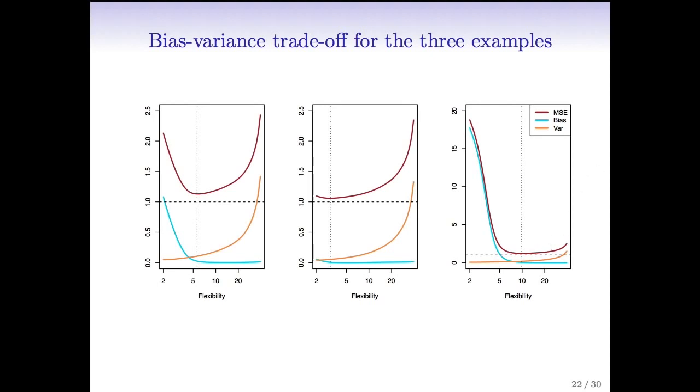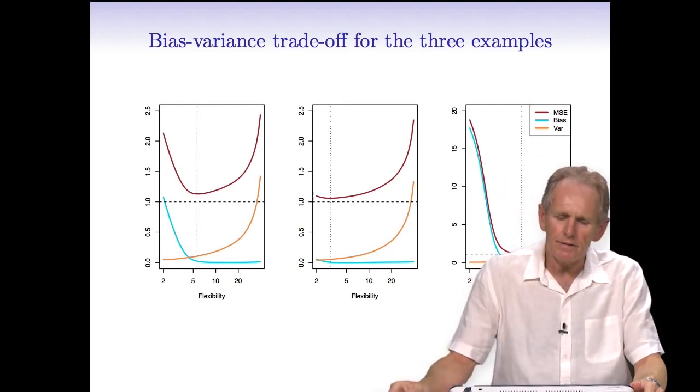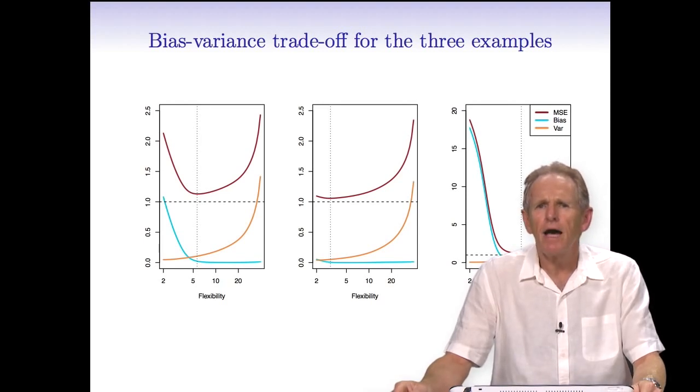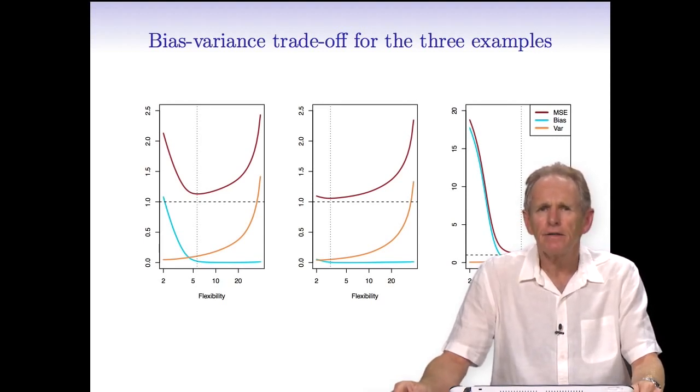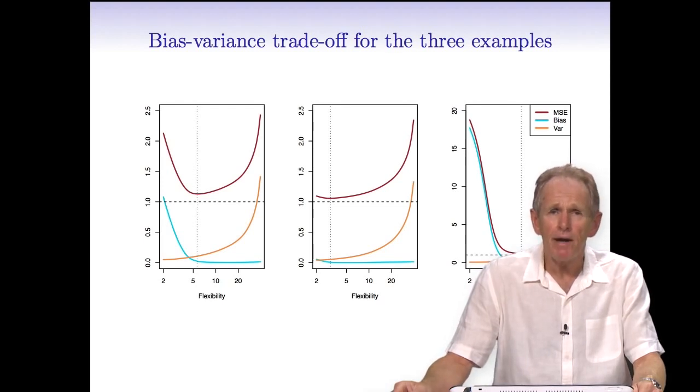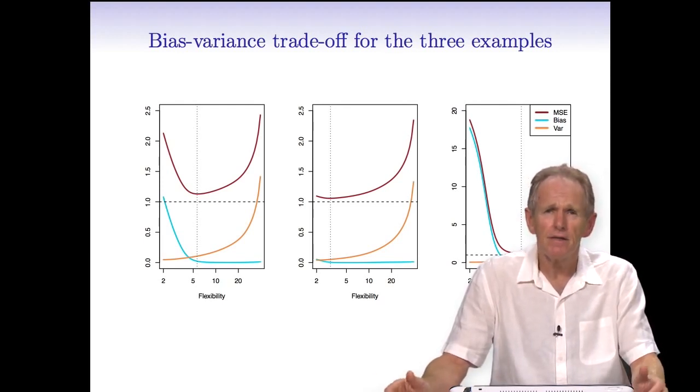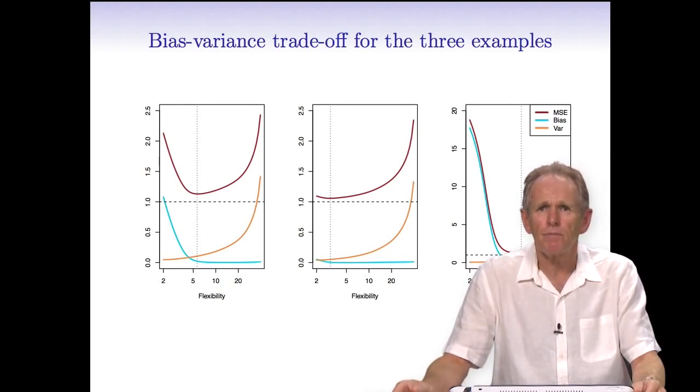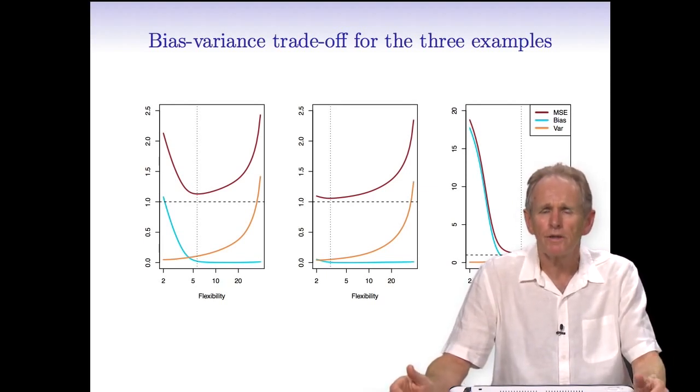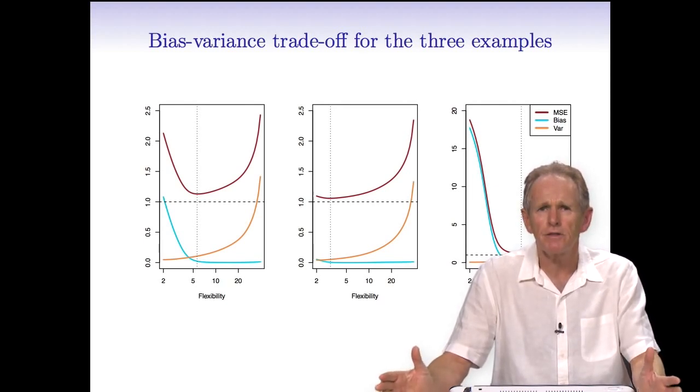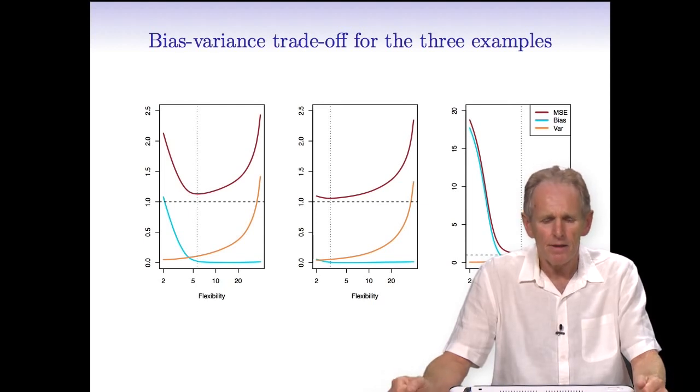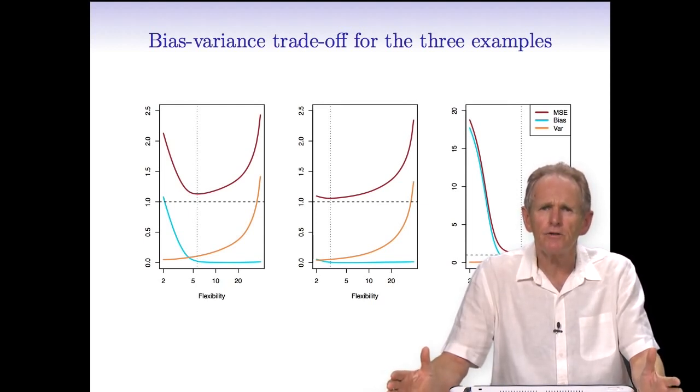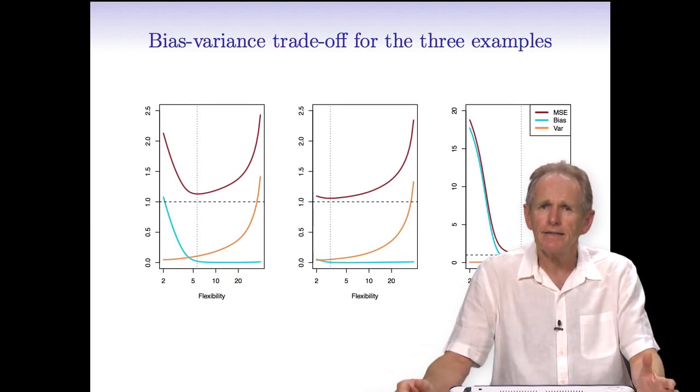We've seen that choosing the amount of flexibility of a model amounts to a bias-variance tradeoff. Depending on the problem, we might want to make that tradeoff in a different place. We can use a validation set or left-out data to help us make that choice. We've been addressing this in terms of regression problems. In the next segment, we're going to see how all this works for classification problems.